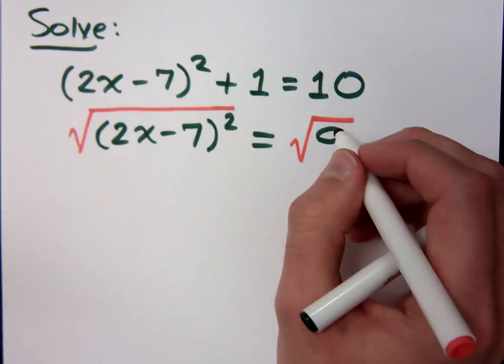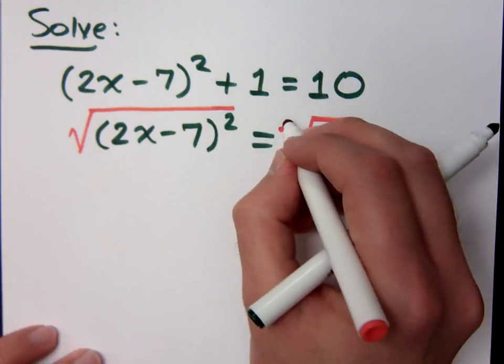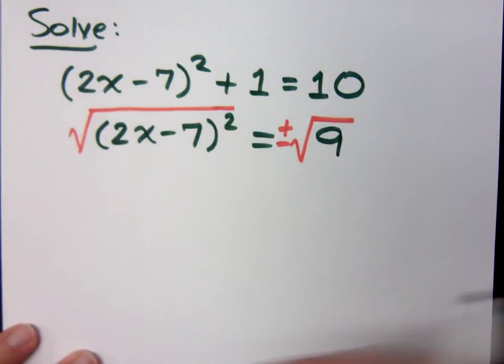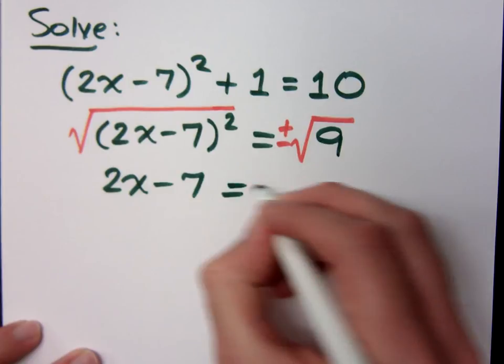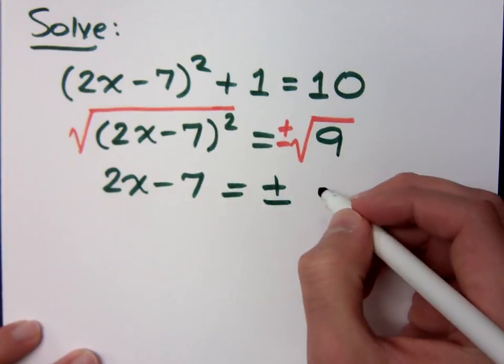Hit it. Plus or minus. I know it's supposed to have two solutions for most of these. So where do I have my left side? That's 2x minus 7 equals plus or minus. What's wrong?